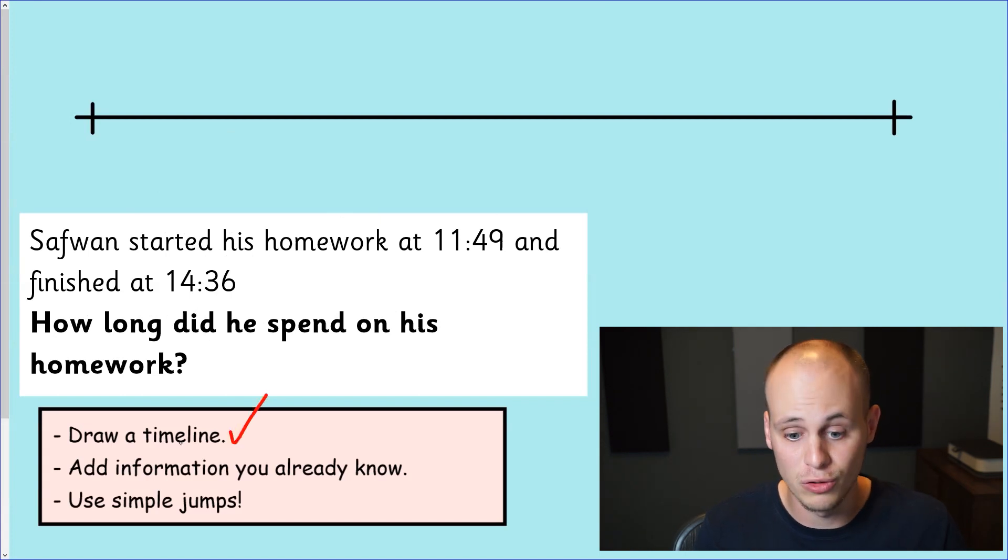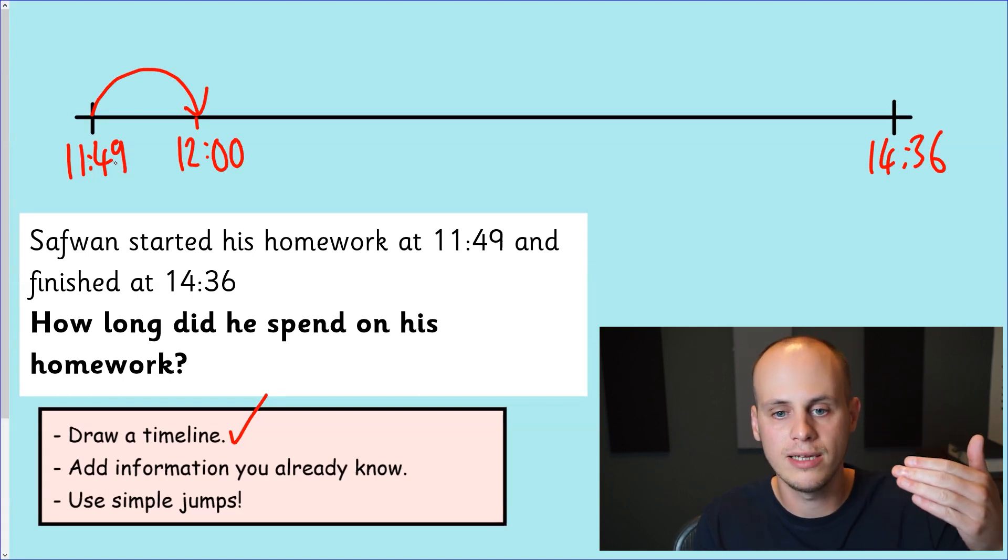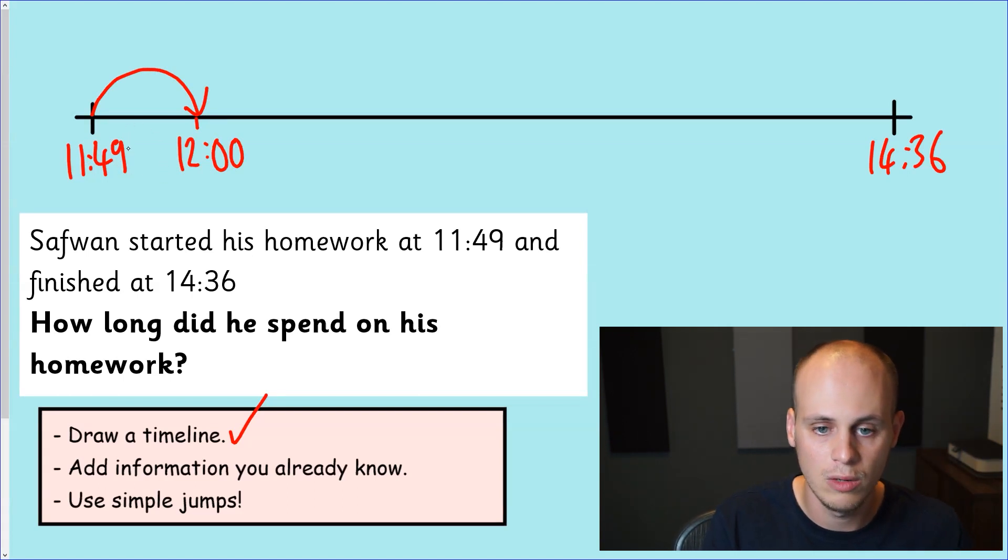Timeline is drawn. Add information you already know. We know he started at 11:49 and finished at 14:36. You ready for this? Simple jumps. Use the hours as checkpoints. I'm not going to try to jump there in one go. I'm going to be nice, go nice and simple. So first thing I'm going to do is just jump to the next whole hour, which is 12 o'clock. So thinking 49 plus how much gets me to 60 minutes because 60 minutes is the next hour. Well, we could do some simple mental arithmetic and work out that that's going to be 11 minutes. And we're keeping track of it because we're writing it on our timeline.